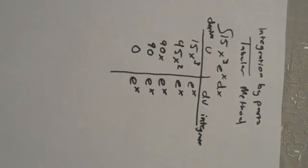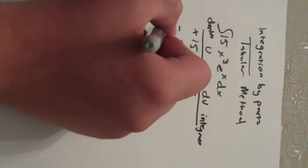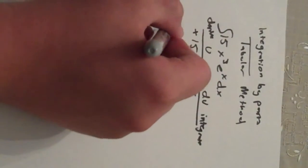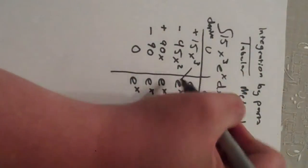Alright, and how we use this is the first one is going to be positive and the second one is going to be negative, positive, negative, and so on and so forth if you have more. And then our answer is going to be in this little diagonal thing.